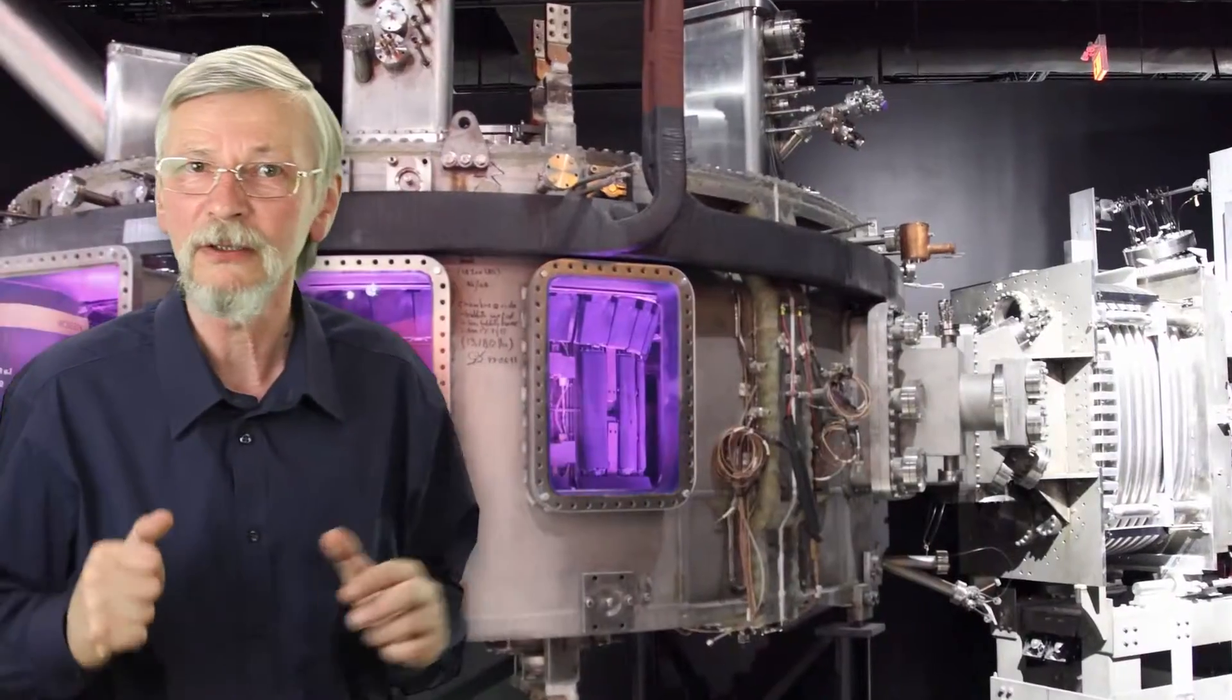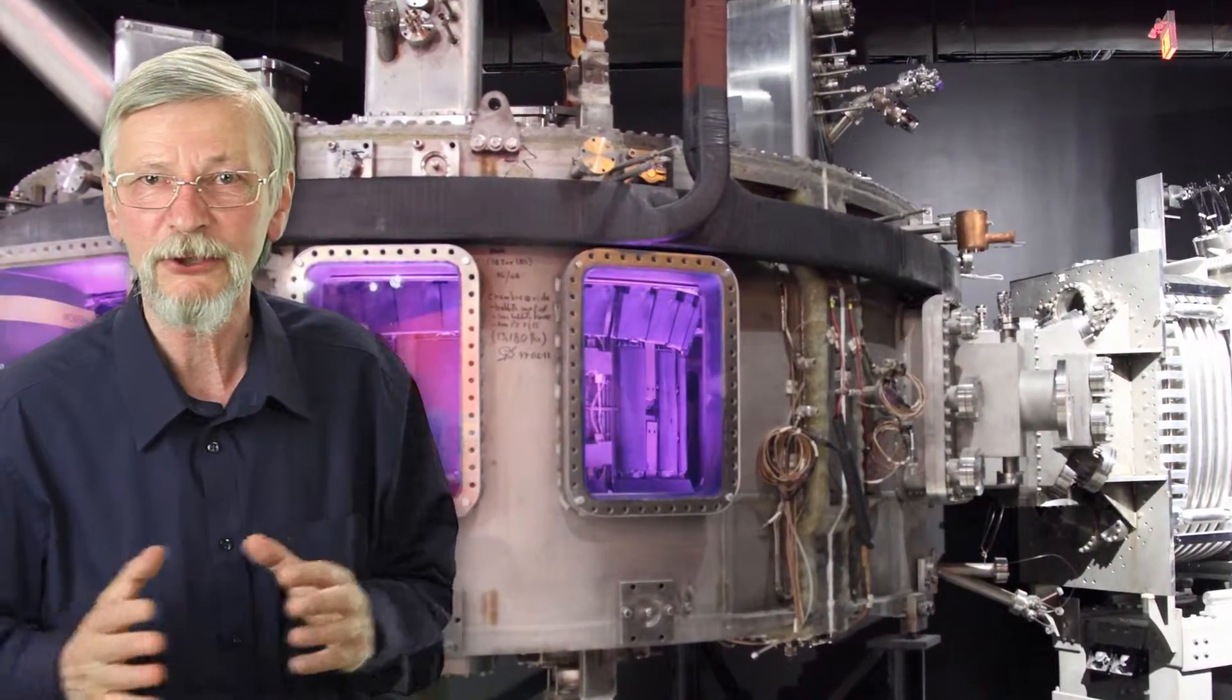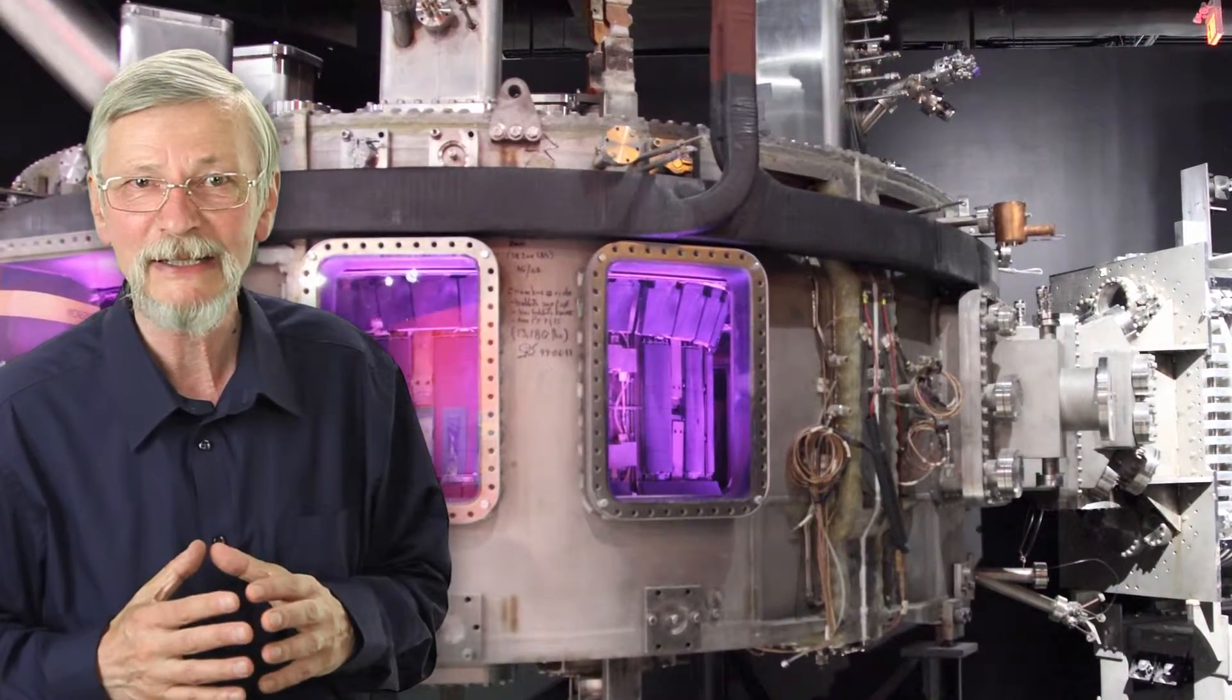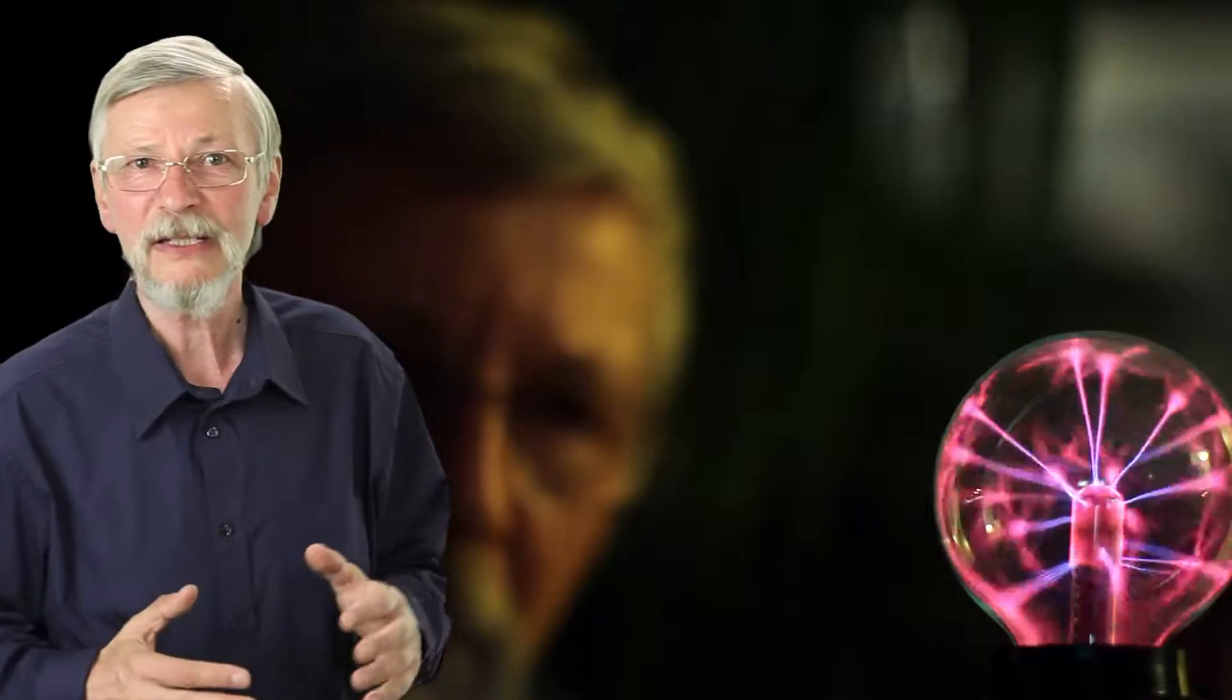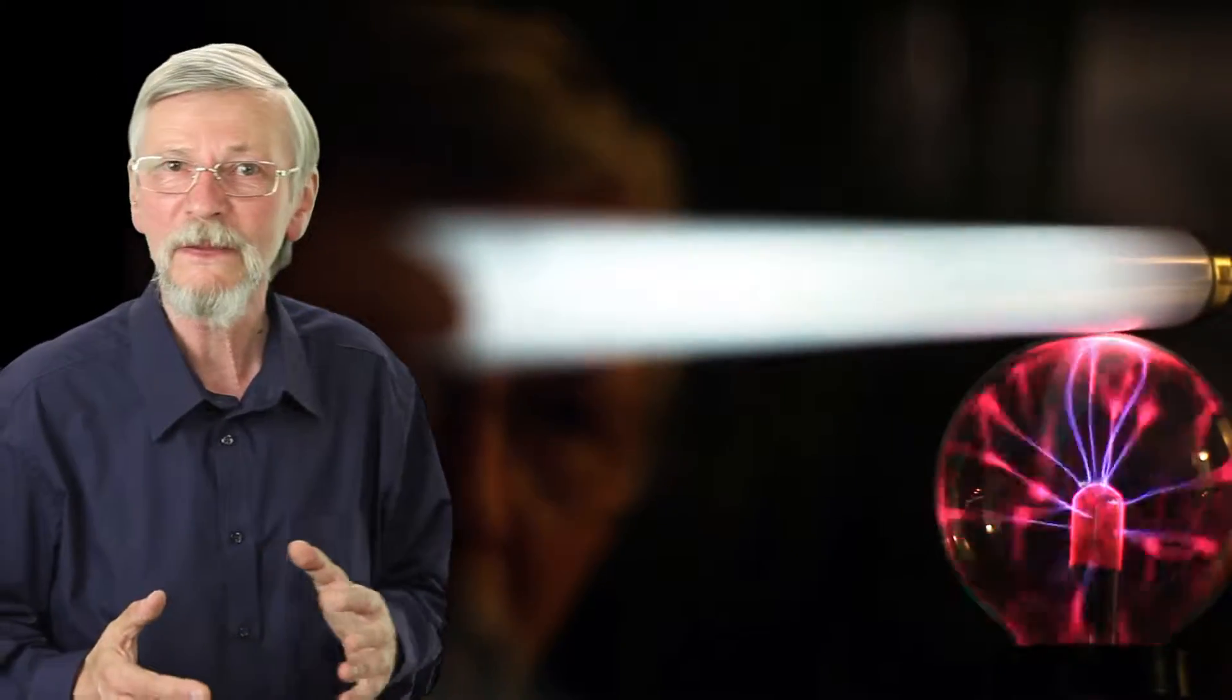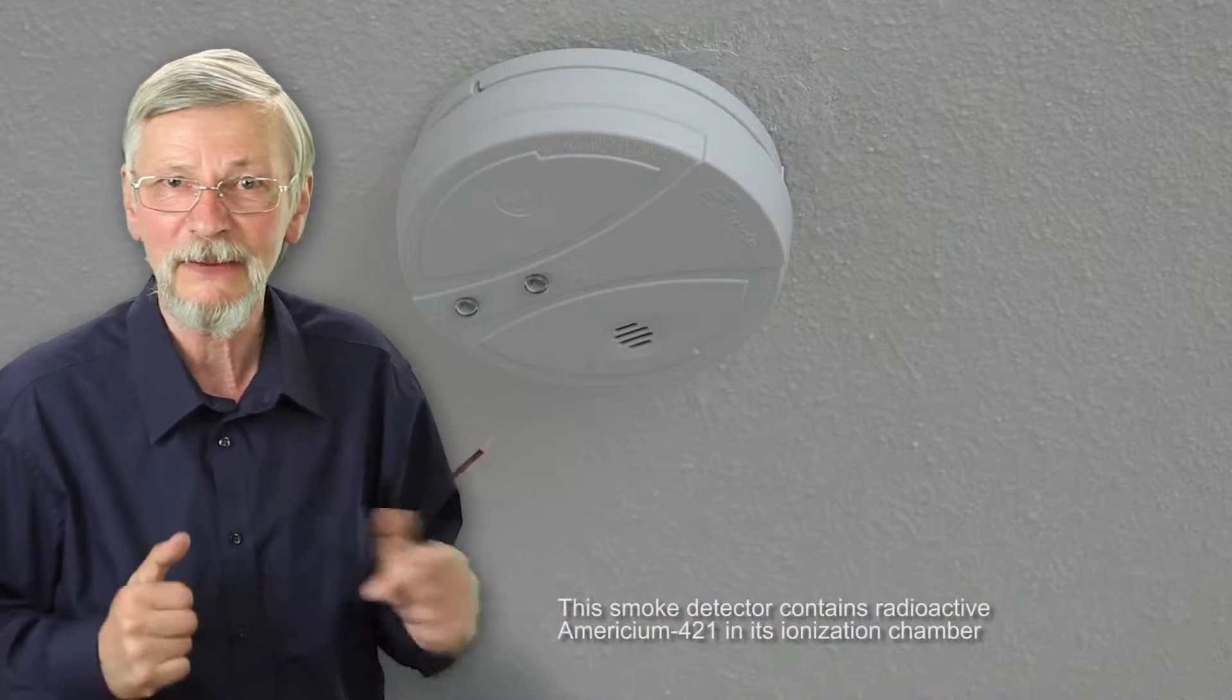In this video we will discuss a subset of radiation known as ionizing radiation, which is present in our environment. This radiation causes the electrons to separate from atoms and molecules, thus ionizing them.